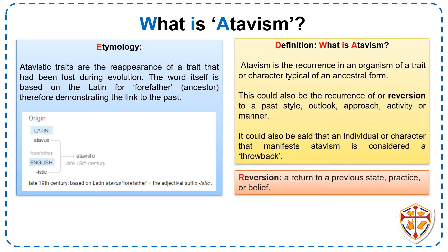Atavism is the reoccurrence in an organism of a trait or a character typical of an ancestral form and is usually due to genetic recombination. This could also be the reoccurrence or reversion to a past style, outlook, approach, activity, or manner. It could also be said that the individual or character that manifests atavism could be considered a throwback.